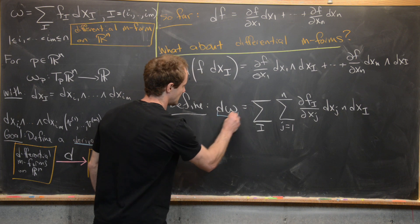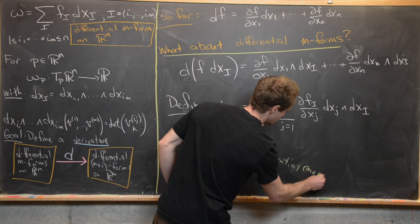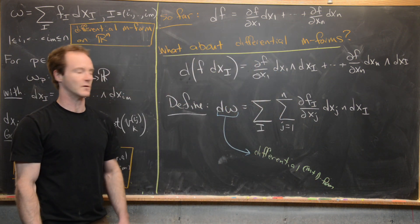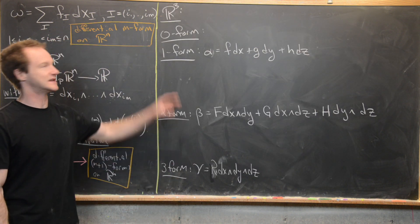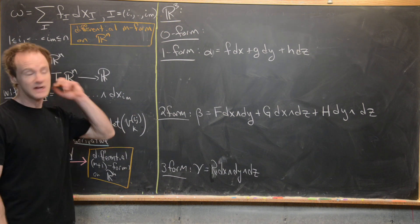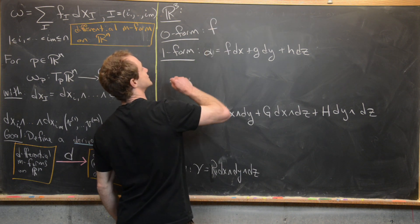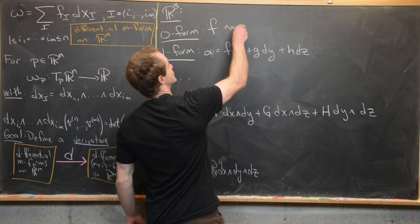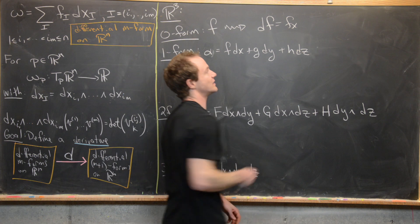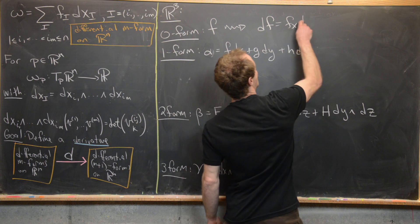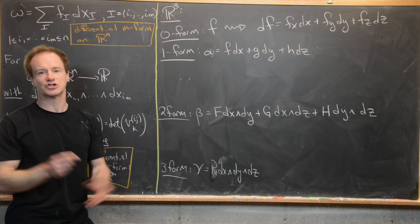This most definitely gives us a differential M+1 form when omega is a differential M-form, achieving our goal. As an example on R³ — where we have choices of 0, 1, 2, or 3 forms — 0-forms are just functions. For a function f, the exterior derivative is df = f_x dx + f_y dy + f_z dz, where dx, dy, and dz are the elementary 1-forms.